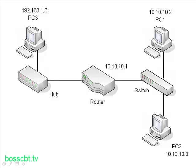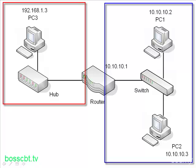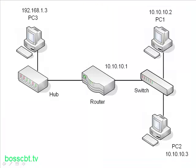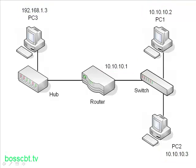Here's our sample network. We have a router with two network segments. PC1 and PC2 are in the same network segment, while PC3 is in a different segment with a different subnet than PC1 and PC2. We can see the IP address of each PC, and also the IP address 10.10.10.1, which is assigned to the router interface connected to the segment of PC1 and PC2. In our first scenario, PC1 is going to send a packet to PC2.